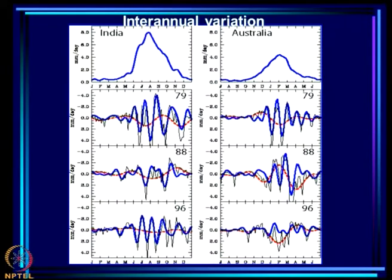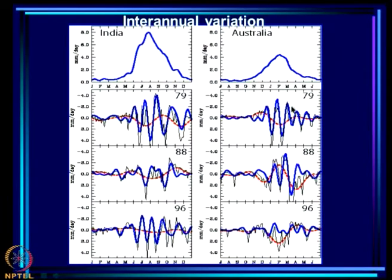The modes have considerable interannual variation: 1979 shows very large amplitude fluctuations, 1988 much smaller amplitude, and 1996 higher frequency than 1988. This is a characteristic of the tropical eastern hemisphere wherever MJO occurs.